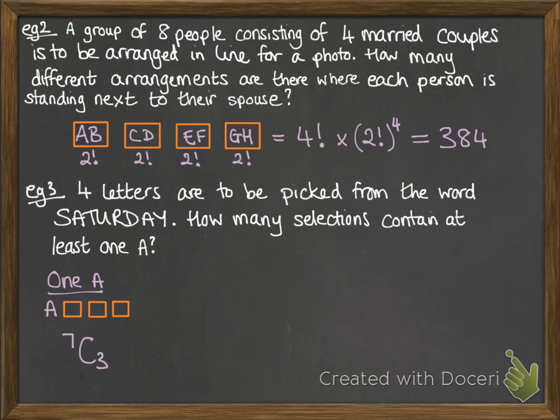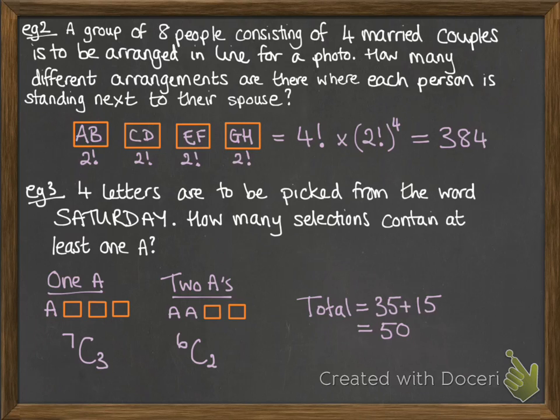Having one A would look like this: we would have an A with three spaces to fill. Having taken out that A, we've got seven letters left from SATURDAY, so we've got 7 choose 3. There are no repeats once we've taken out the A. Two A's would look like this: we've got two spaces to fill. We've taken out two A's, so we have six letters left, so it's 6 choose 2. Seven choose three comes to 35, and 6 choose 2 is 15. So add them together, and we get 50.